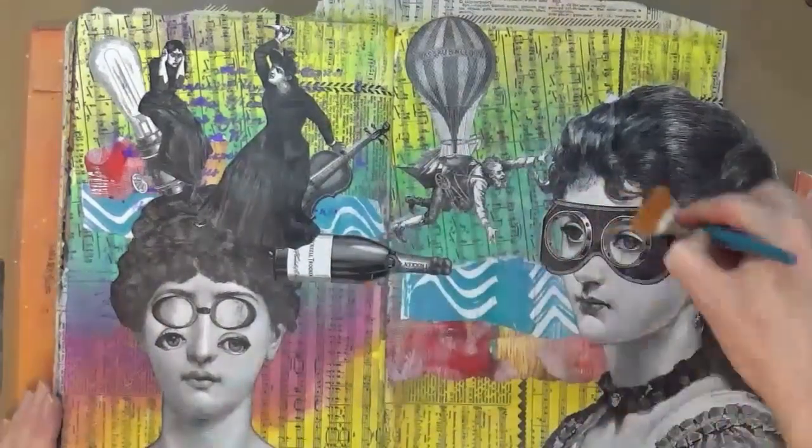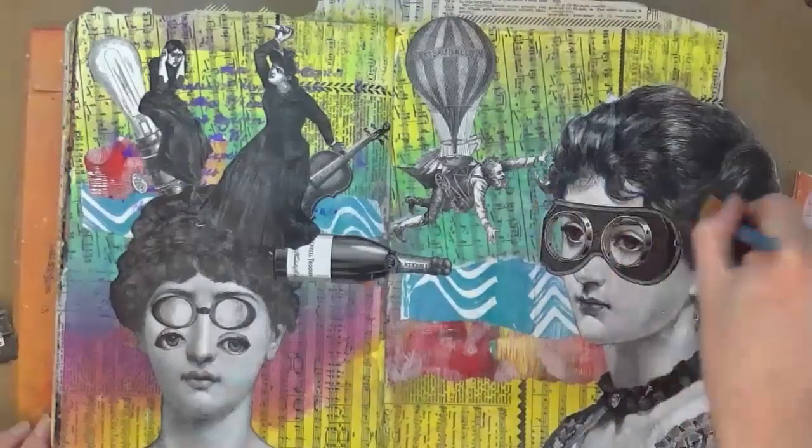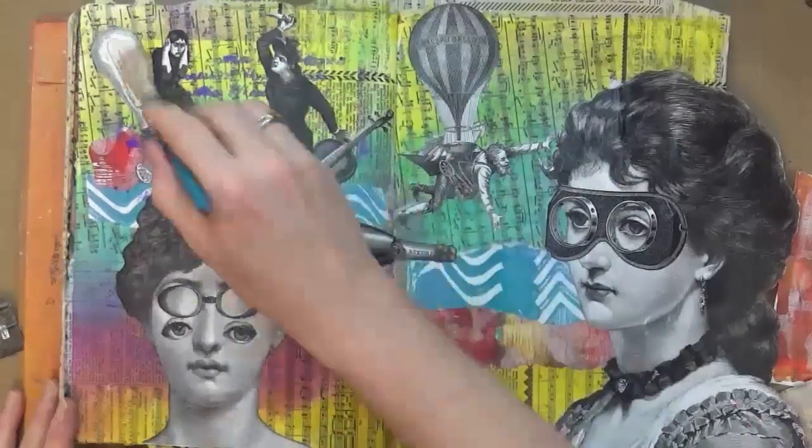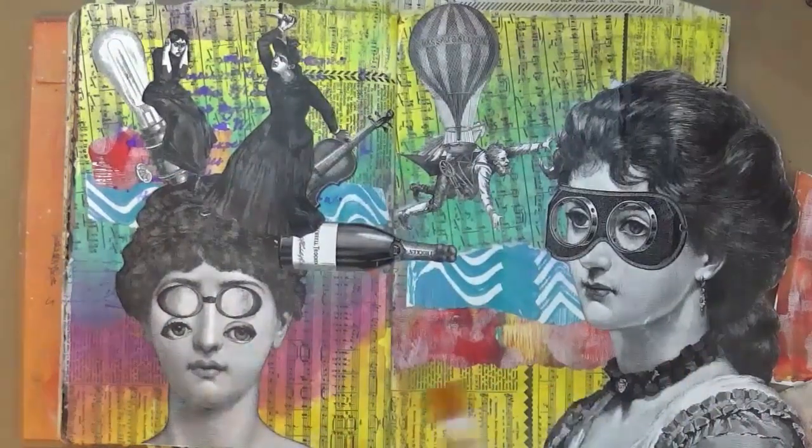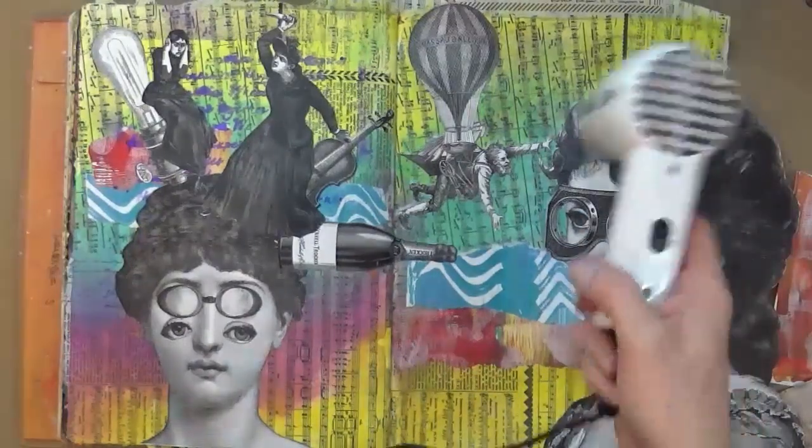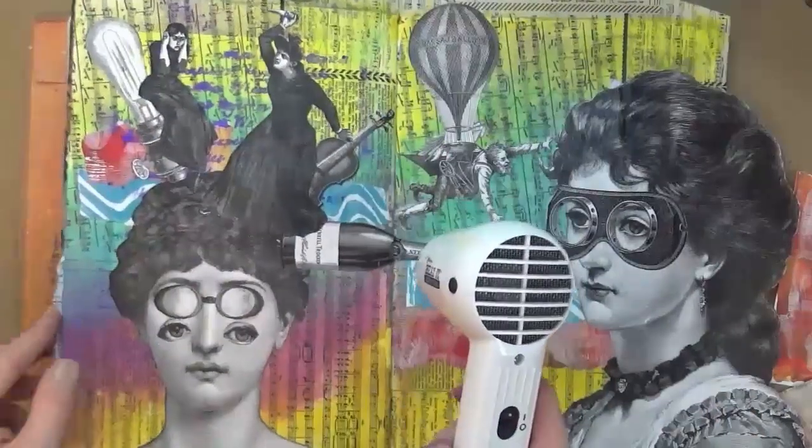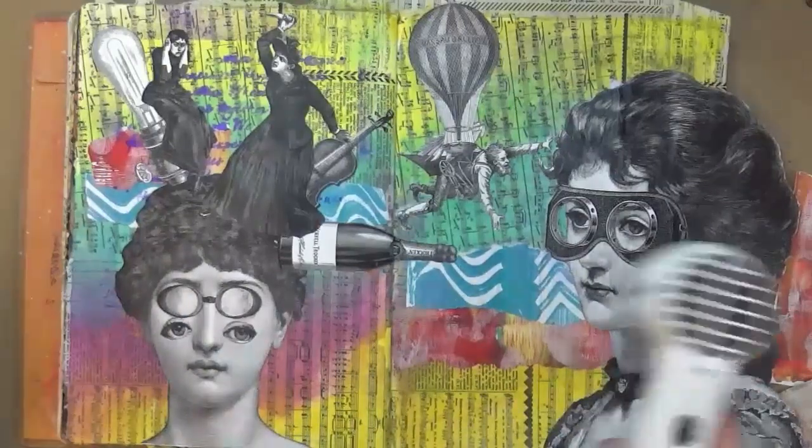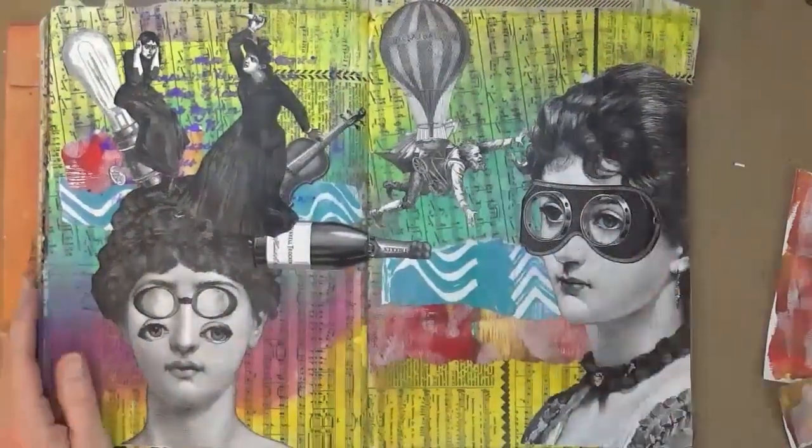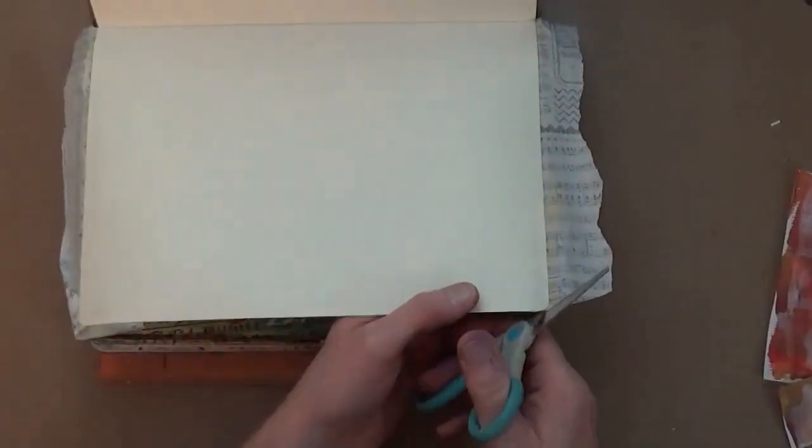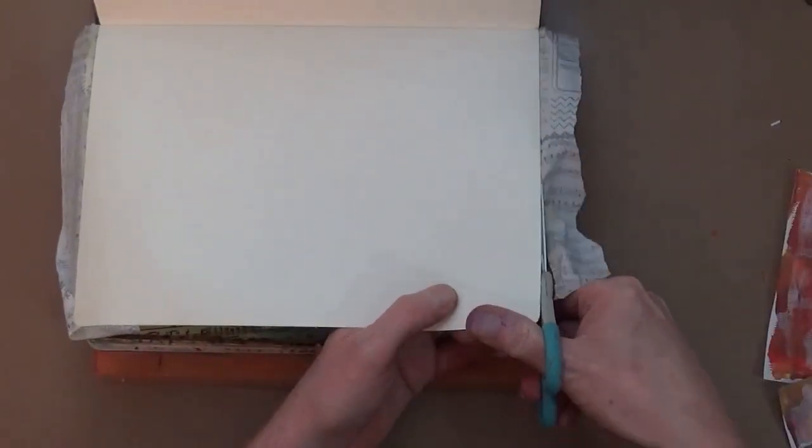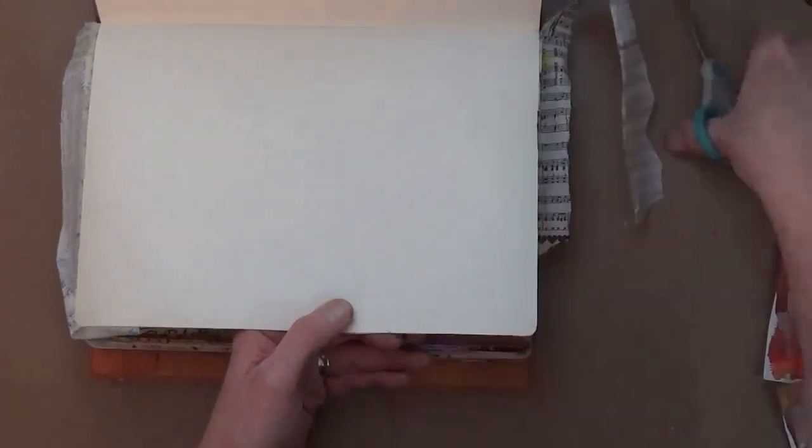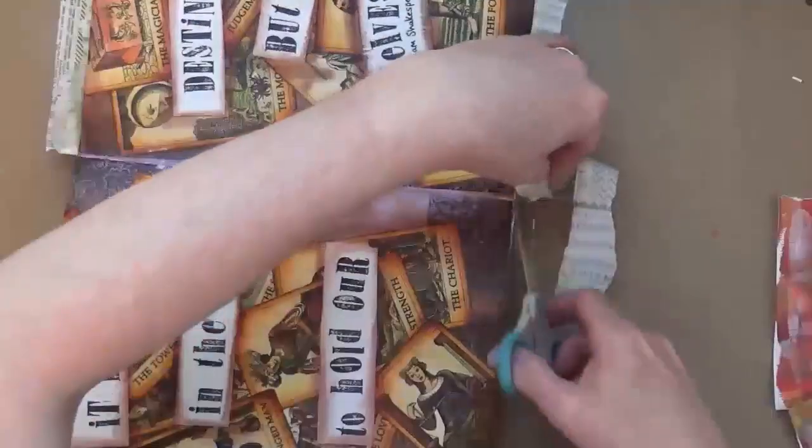Adding some more steampunky style elements to the characters there. Just give it a final heat blast and then we're ready to move on to the next stage. Okay, so I'm now going to take my scissors and trim off all the excess tissue paper from all the way around the pages just to tidy it up. And then we'll get on with adding our message and then we'll get on with the next stage.